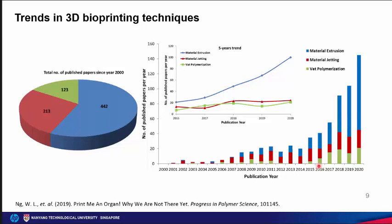Looking at publication trends over the last few decades, material extrusion has the highest number of publications, followed by material jetting and vat polymerization. Extrusion-based bioprinting is the most commonly used technique due to its fast printing speed in terms of volume per minute, its wider range of printable bioinks, and the rapid development of novel bioinks and strategies that have enabled the fabrication of human-scale tissue constructs.